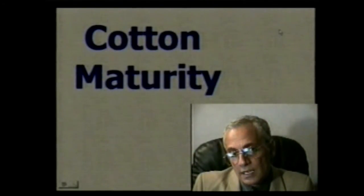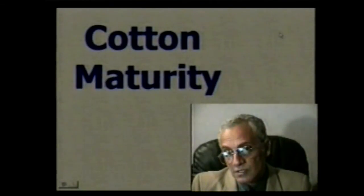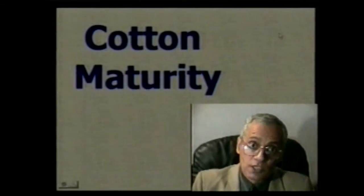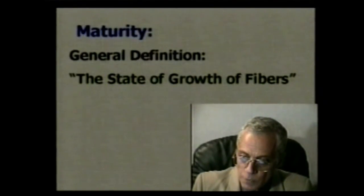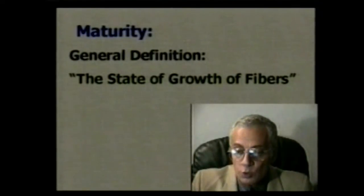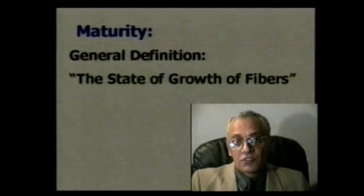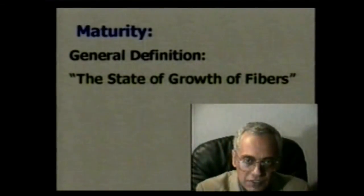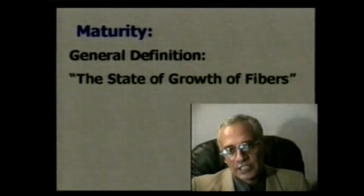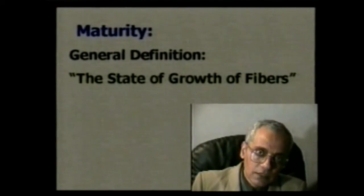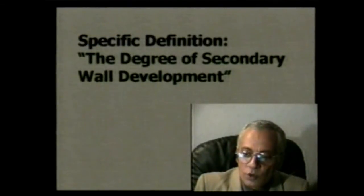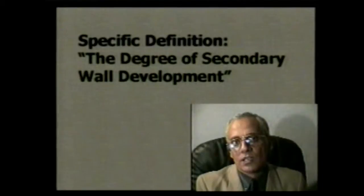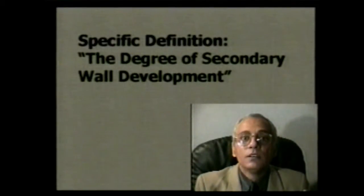Until we establish a very accurate method that is fast and reliable, it will be hard to predict the impact of immaturity in our process. In general, maturity may be defined as the state of growth of fibers. Theoretically, the fundamental definition of maturity that has been used is the degree of secondary wall development — the primary wall develops first, length is completed, and then the secondary wall develops, where the fibers start to thicken.